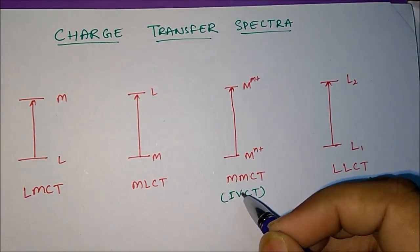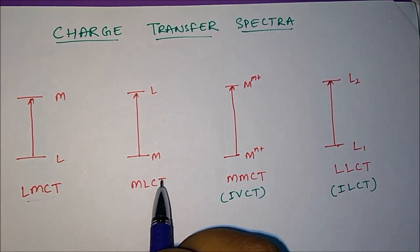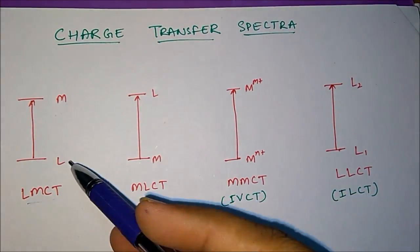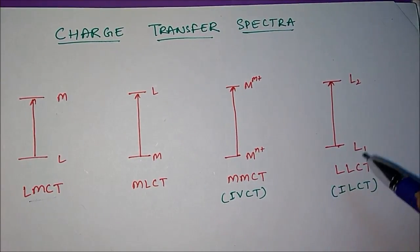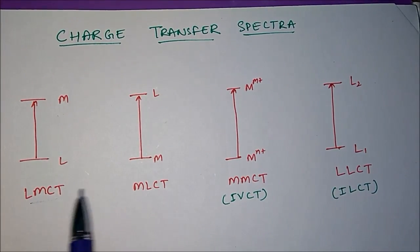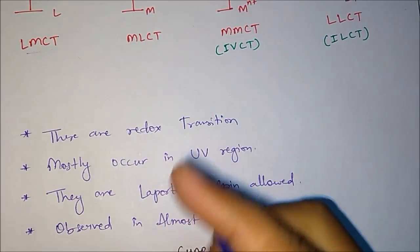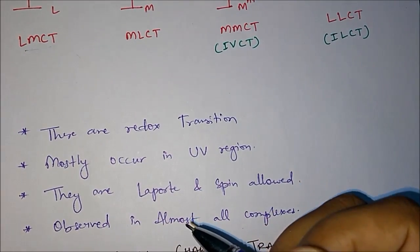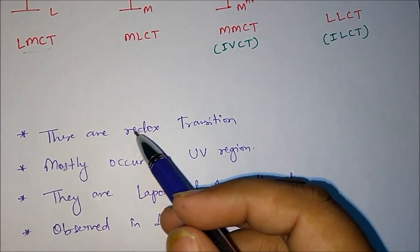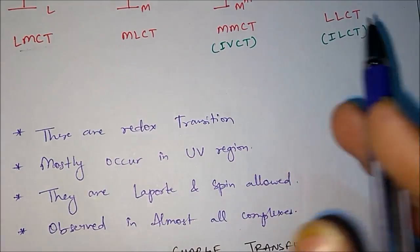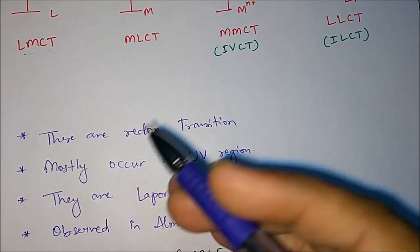Now these two - MMCT and LLCT - are not as important as LMCT and MLCT. The first and second types, ligand to metal charge transfer and metal to ligand charge transfer, are very important because questions are basically asked from these. I will explain MMCT and LLCT in short, but we will talk about LMCT and MLCT in detail. There are a few things which are common in all of the transitions. First, these are all redox transitions - meaning one thing is getting reduced and another is getting oxidized.